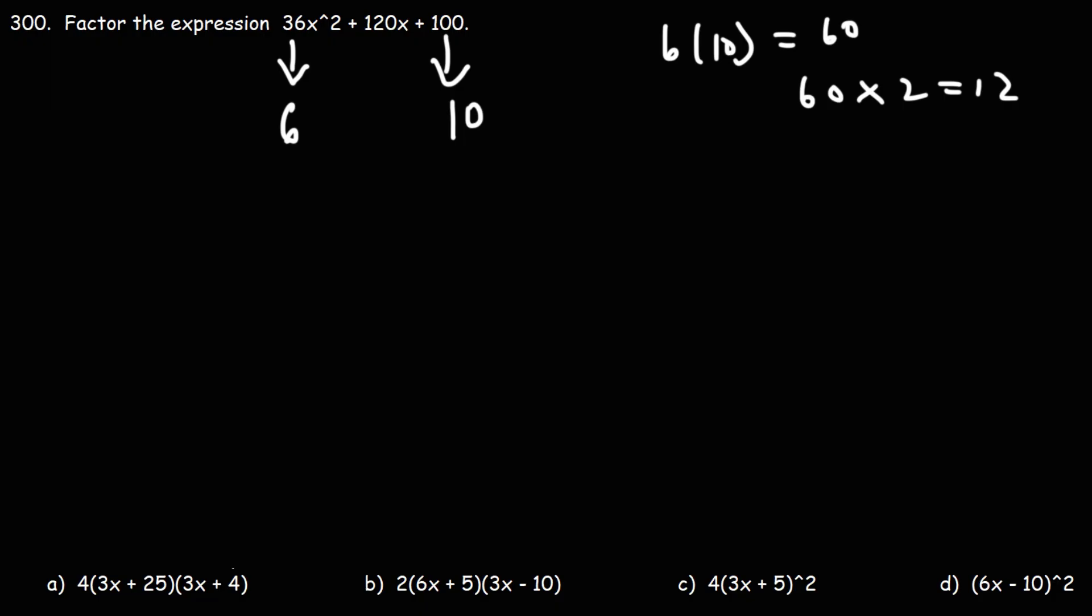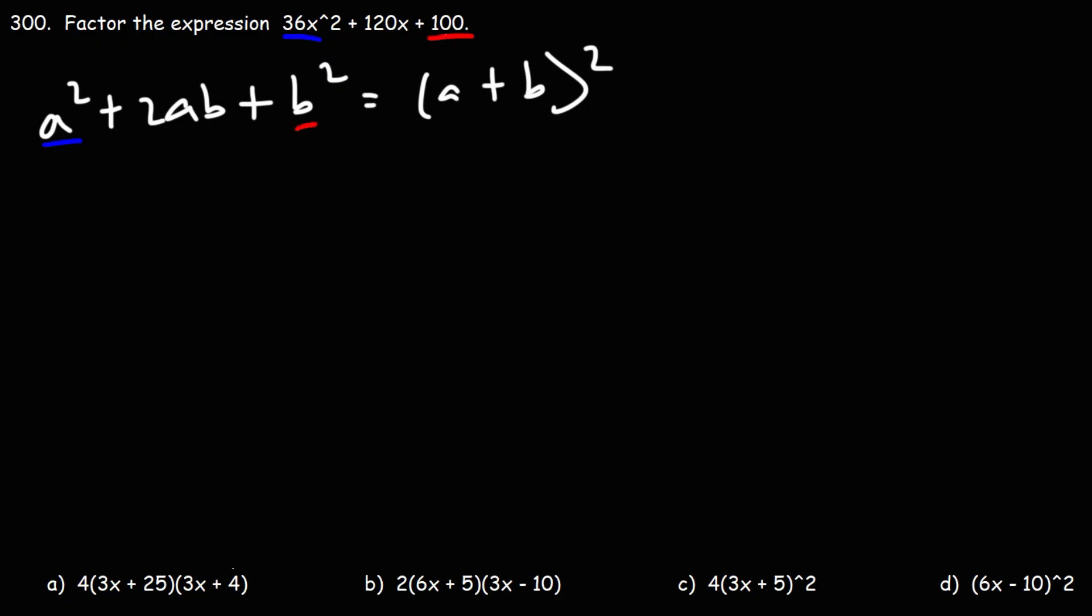So we could use the formula to get the answer. A squared plus 2ab plus b squared is going to be equal to a plus b squared. So a squared is 36x squared, b squared is 100.